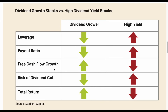The next difference goes hand-in-hand with payout ratio: free cash flow growth. Dividend growers grow their free cash flow because they reinvest so heavily back into the business, while high-yield stocks typically don't grow free cash flow at such a high rate because they're using most of it to pay out dividends. As a result, the risk of a dividend cut is much higher for higher-yielding investments, which is why you have to be very careful when selecting high-yield dividend stocks. Finally, total return for dividend growth stocks is typically much higher — you'll see more share price appreciation and, over the very long term, more dividend payments. With high-yield stocks, you're not going to see much share price appreciation, but you will get more immediate dividend income.